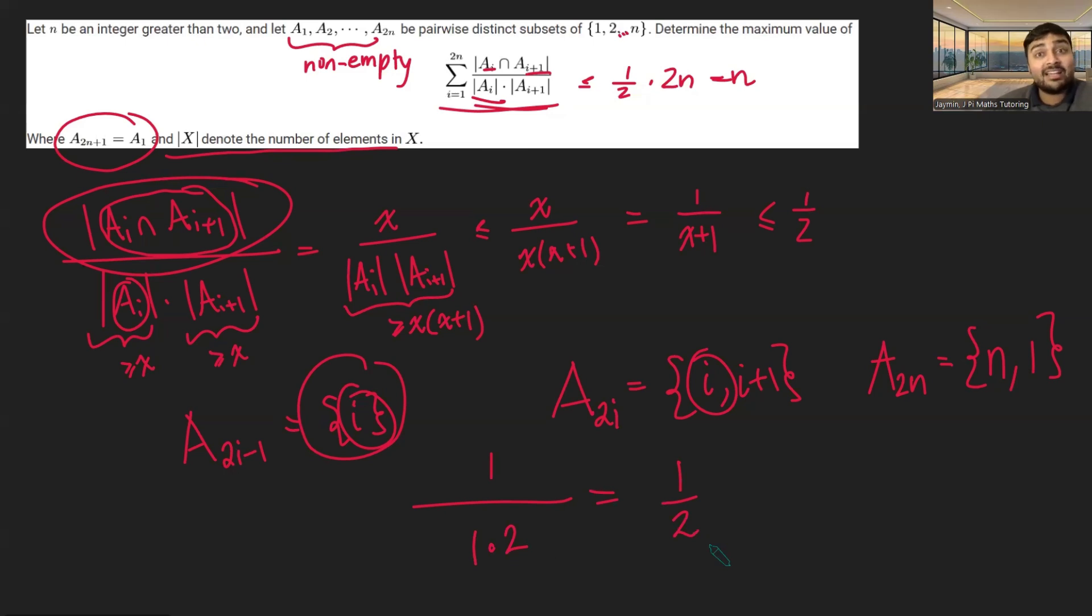And so you're going to be adding up a half 2n times, which gives you n. And so the maximum value of this sum is indeed n.